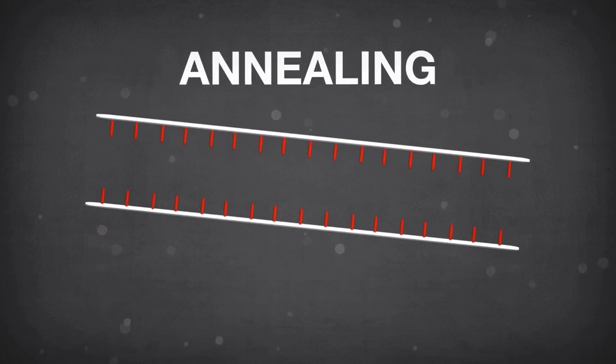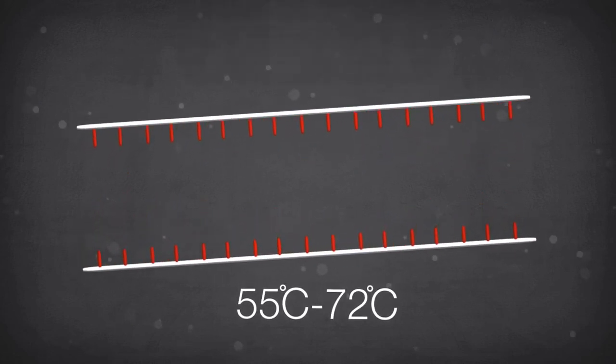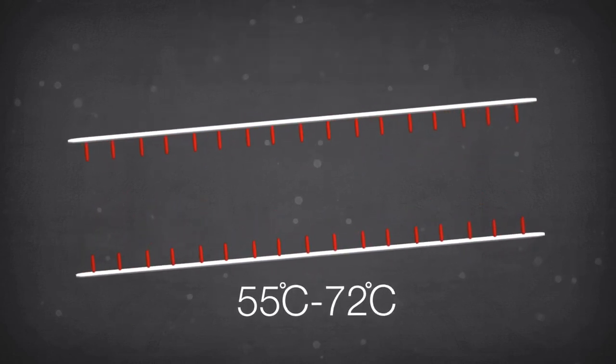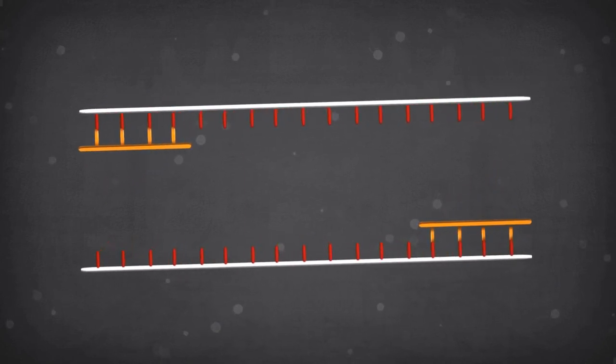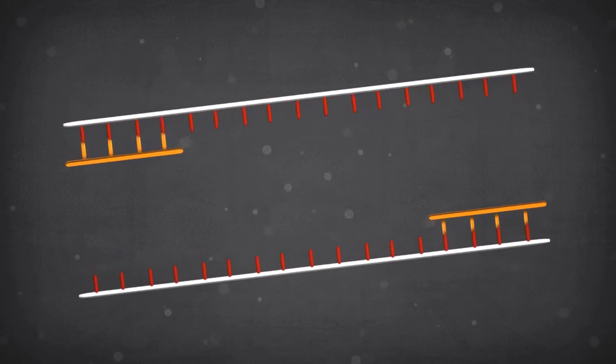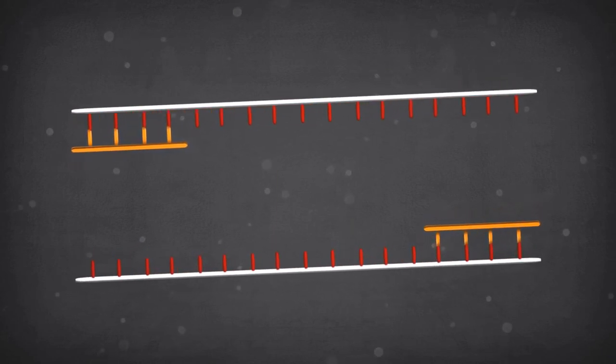The next step is annealing at a temperature between 55 and 72 degrees Celsius, where the primers bind specifically to complementary sequences of both strands of the DNA template. The primers are designed to bracket the region that is targeted for amplification.